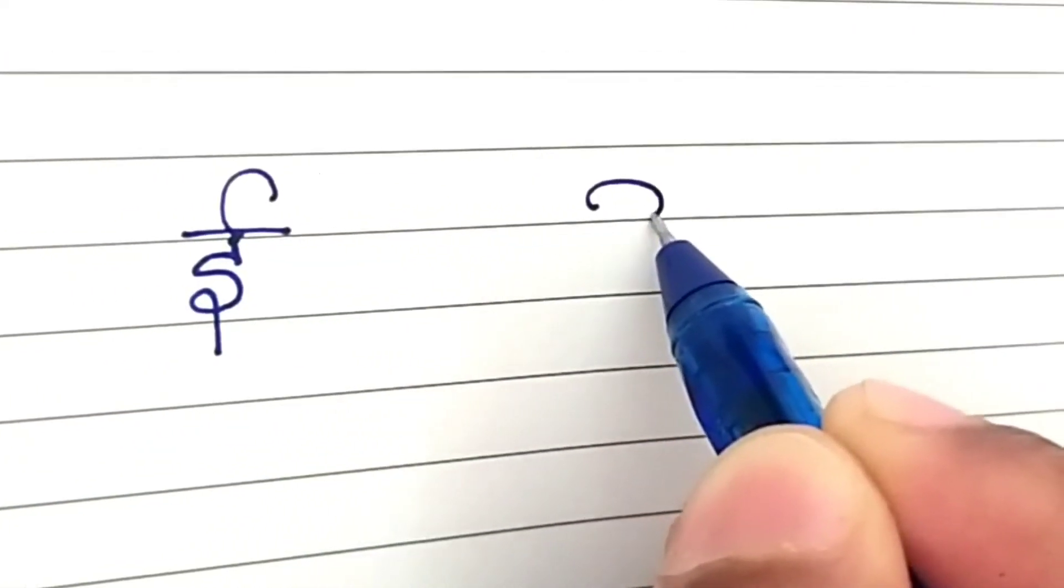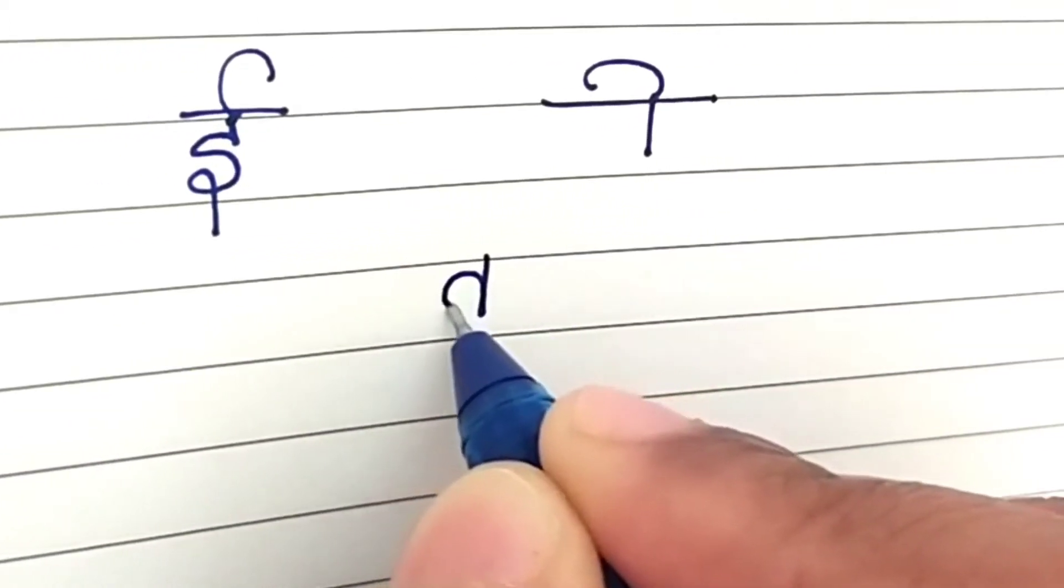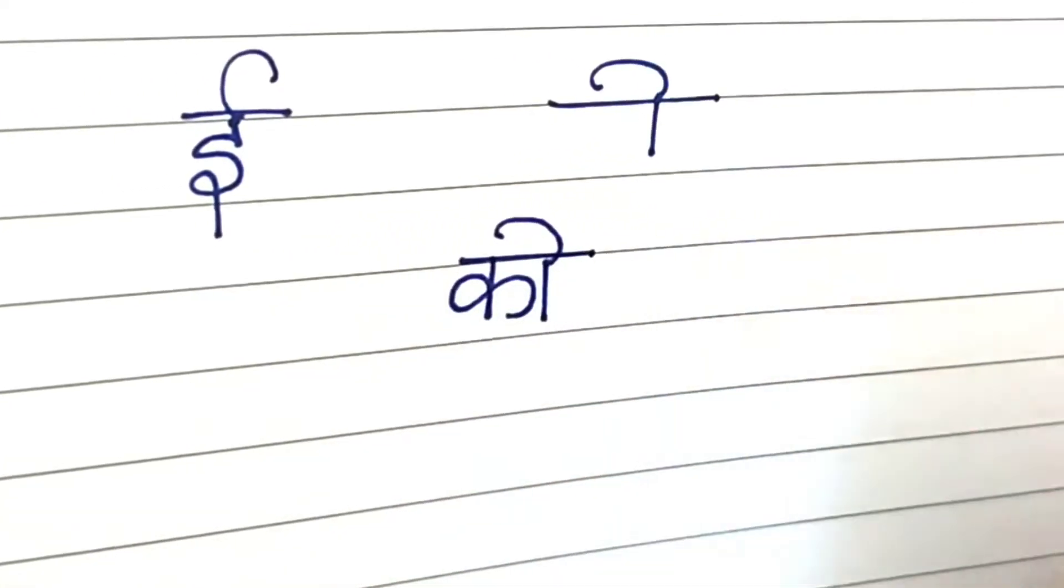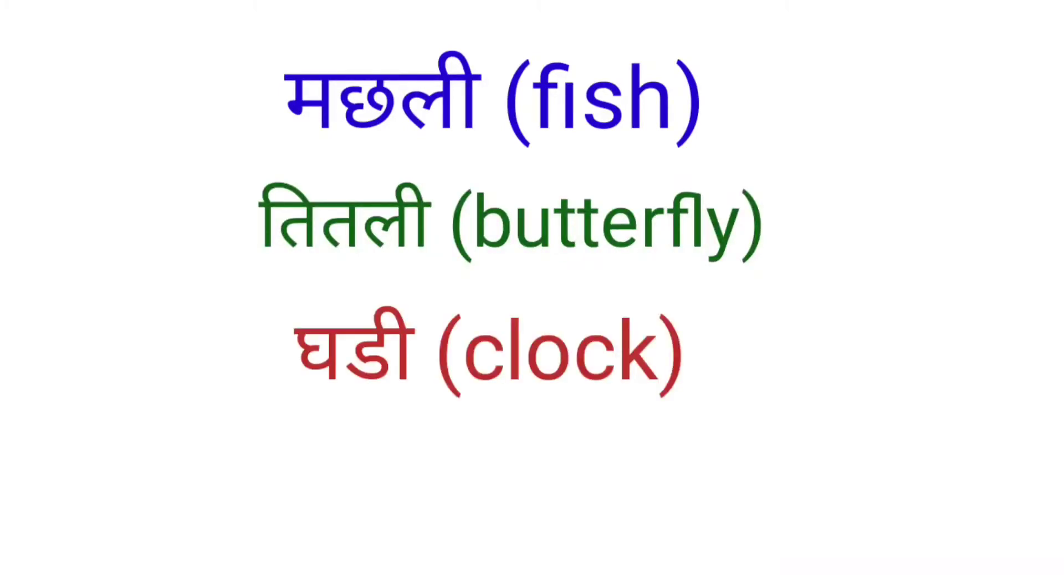Next vowel, I. This is the symbol for this sound. Ki, Si, Ri, Bi. Machali, Titali, Khadi, Tharti.